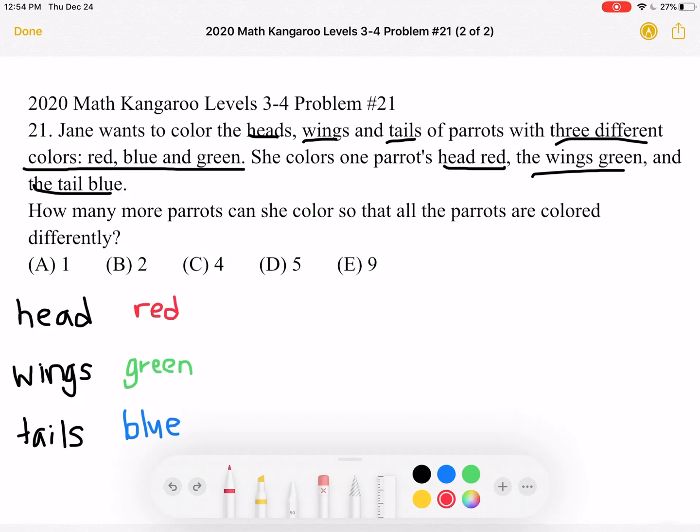So let's try to see how many parrots we can make with a red head. So the first one we have red head, green wings, blue tail. Well we can also have red head, blue wings, green tail.